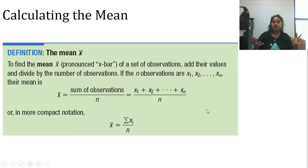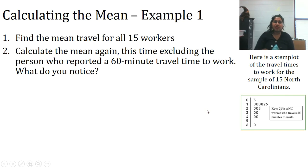So this is our definition of what a mean is and a basic definition of the formula. You probably kind of know how to do this, so let's just dive on in and find the mean travel for all of our 15 North Carolinian workers. They gave us a stem plot. The best thing to do here is to go ahead and just start calculating. So this represents 5 plus 10 plus 10 plus blah, blah, blah. And so you'd put all these numbers.